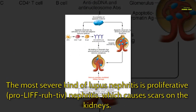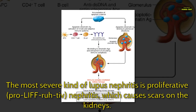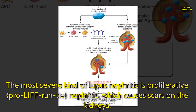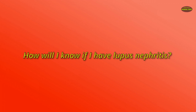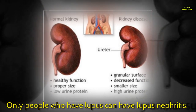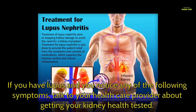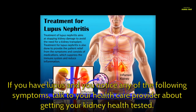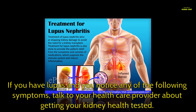The most severe kind of lupus nephritis is proliferative nephritis, which causes scars on the kidneys. Only people who have lupus can have lupus nephritis. If you have lupus and you notice any of the following symptoms, talk to your health care provider about getting your kidney health tested.